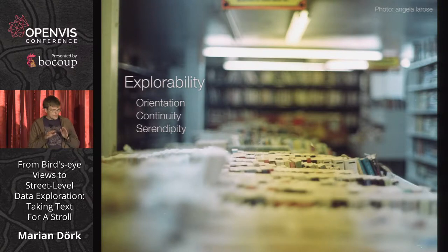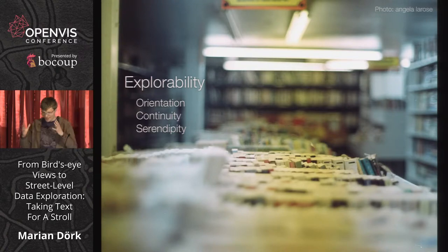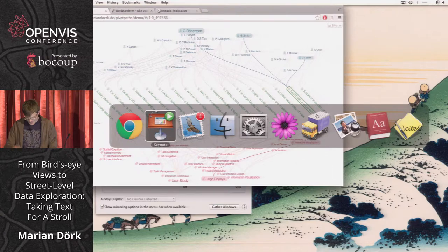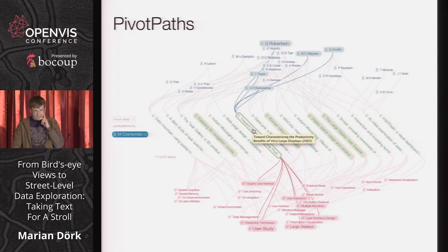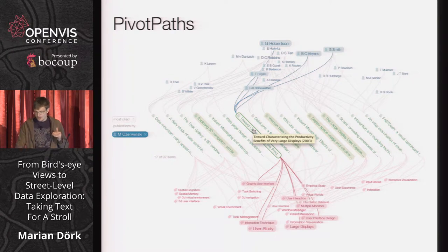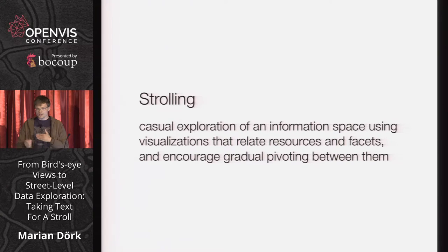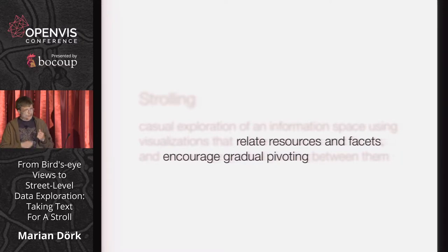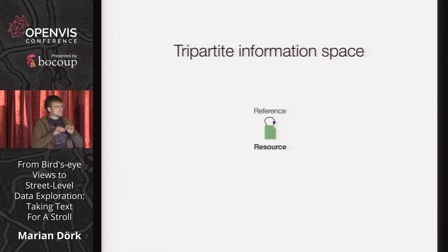Now I'm going to move from this conceptual, philosophical preamble to demo mode, which should be exciting because demos are always a risk. I'm going to introduce the project a bit before I show it in action. Pivot Paths is a visualization project I've done at Microsoft Research. The motivation was very tightly linked to that notion of the information flâneur strolling through data, with the goal to help the information flâneur relate the resources — in this case academic publications — and their associated facets, and encourage a gradual pivoting through a very large database of publications.